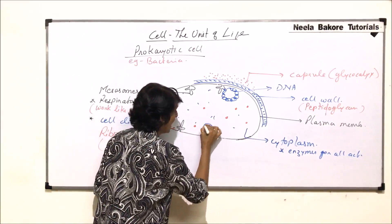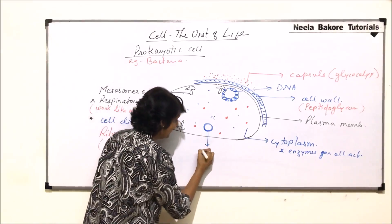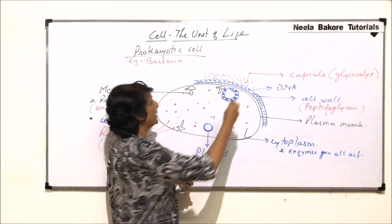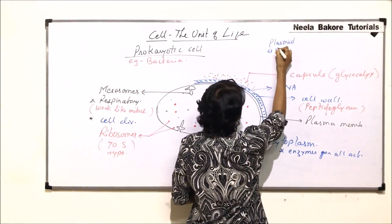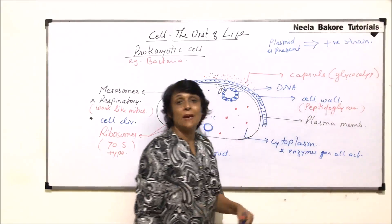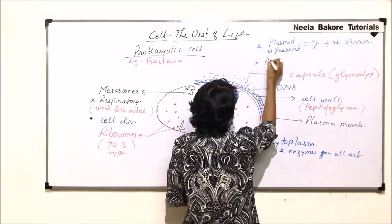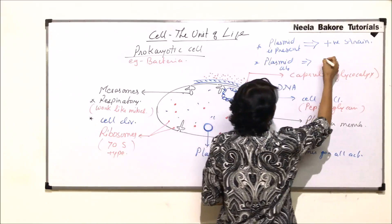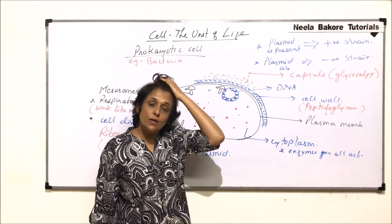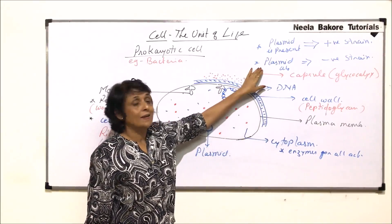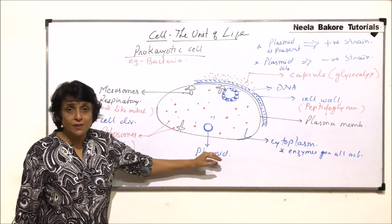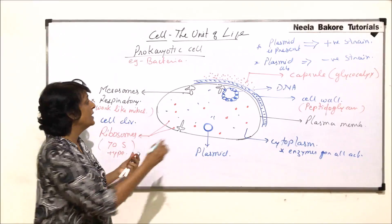In some bacterial cells there is a circular extra-nuclear genetic material known as plasmid. If a bacterial cell has plasmid, it is termed as a positive strain, and if plasmid is absent then the cell is termed as a negative strain. The positive strain cell is termed a donor cell or considered equivalent to the male cell, while the negative strain cell is considered a recipient cell or equivalent to the female cell.